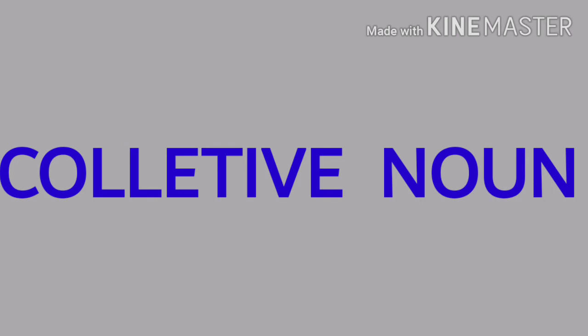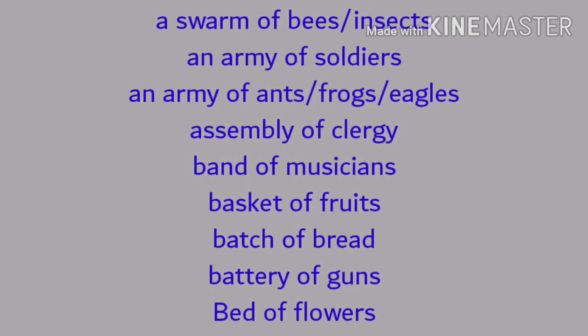For bees or insects, a collection is called a swarm — swarm of bees, swarm of insects. An army of insects, an army of ants, an army of frogs, an army of eagles. An assembly of clergy. A band of musicians. A barrel of monkeys. A basket of fruits. A batch of bread. A battery of guns. A bed of flowers.